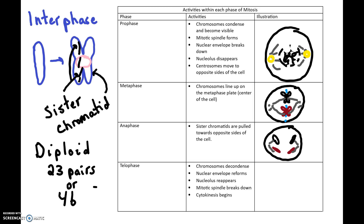So let's go to telophase. The bulleted list of activities: the chromosomes are going to unwind and decondense, going back to that thread-y, string-y chromatin. The nuclear envelope is going to reform, the nucleolus will reappear, and the mitotic spindle will break down. Cytokinesis will begin. In telophase we're basically undoing everything that happened in prophase — it's really the opposite of prophase.